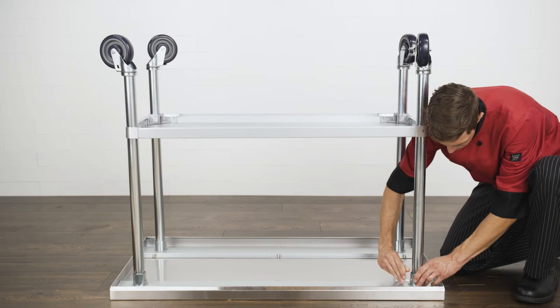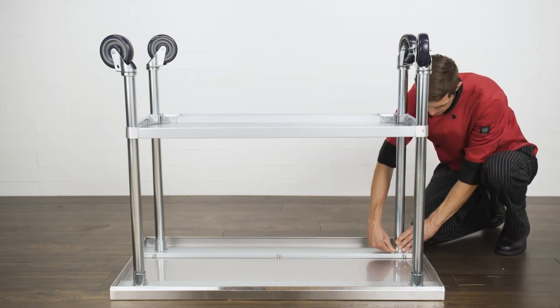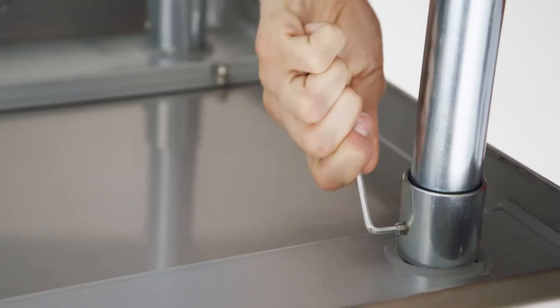Place the legs into the tabletop gussets and use an Allen wrench to tighten the screws and secure the legs back into place.